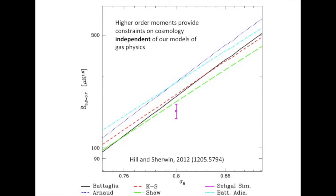Moreover, a high signal-to-noise measurement of this statistic could also potentially break degeneracies between cosmological parameters and parameters that describe the gas pressure profile of the intracluster medium in future data — something we hope to revisit in the future.